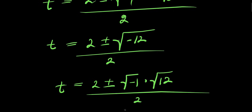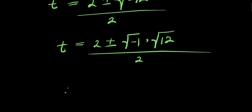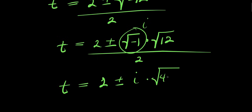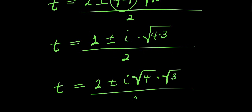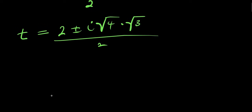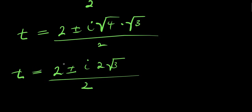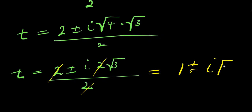We get the square root of 12 divided by 2. From here we have t equal to — this is i, the square root of negative 1 is i — times this is 4 times 3, divided by 2. So from here we have t equals 2 plus or minus i times the square root of 4 times the square root of 3, divided by 2. The square root of 4 is 2, so t equals 2 plus or minus i times 2 root 3, divided by 2. This cancels, so we have t equals 1 plus or minus i times root 3.